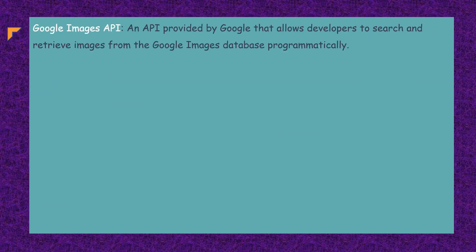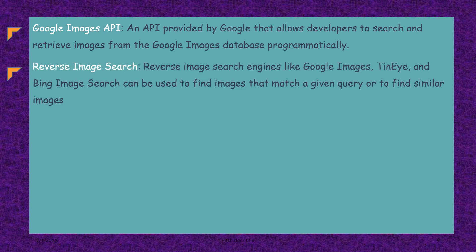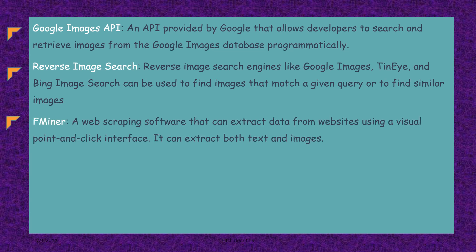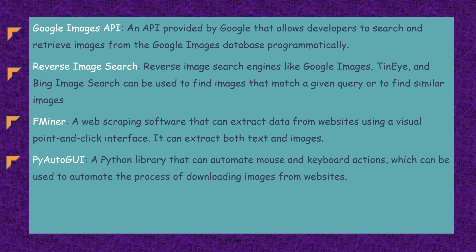Google Images API is an API provided by Google that allows developers to search and retrieve images from the Google image database programmatically. Reverse image search engines like Google Images, Yandex, and Bing image search can be used to find images that match a given query or to find similar images. Fminer is a web scraping software that can extract data from websites using a visual point-and-click interface; it can extract both text and images. PyAutoGUI is a Python library that can automate mouse and keyboard actions, which can be used to automate the process of downloading images from websites.